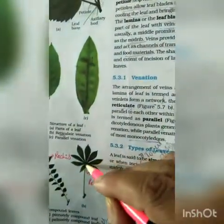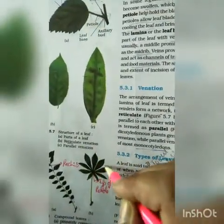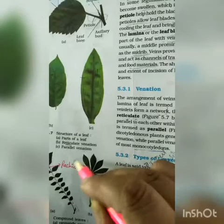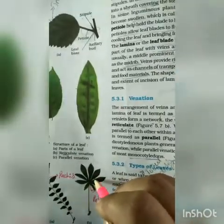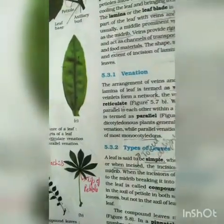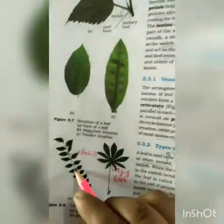This pinnate arrangement is seen in neem. Next is palmately compound — the leaflets are attached to a common point. The example of palmately compound leaf is silk cotton.